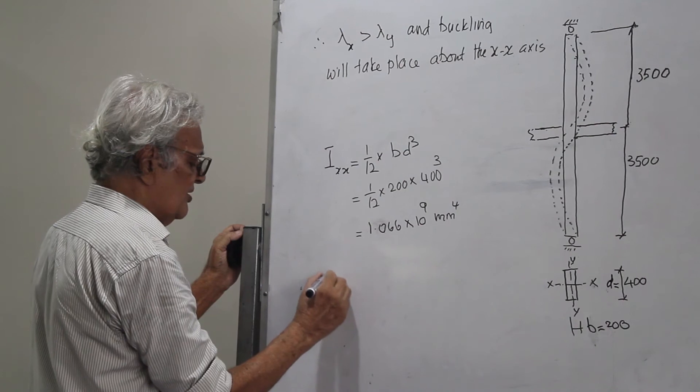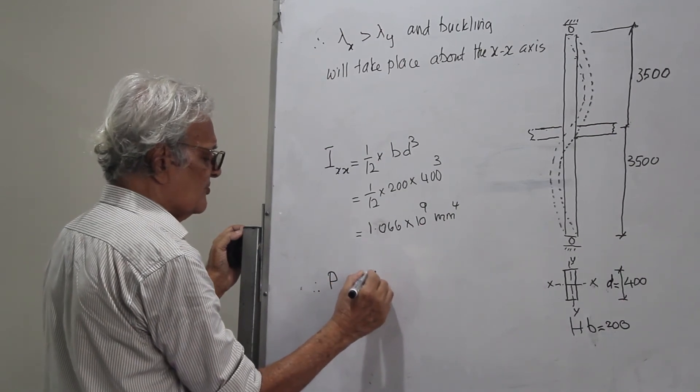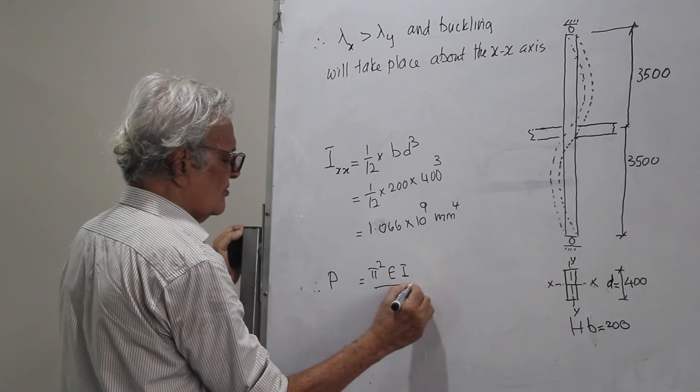Therefore, P equals pi squared EI over LE squared.